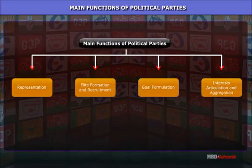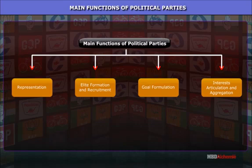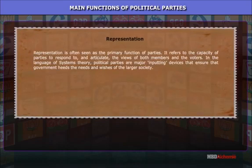Political parties are an essential part of democracy — they are the backbone of democracy. According to Munro, government by free political parties is merely another name for democratic government. A number of general functions of parties can be identified. The main functions of political parties are as follows: Representation is often seen as the primary function of parties.